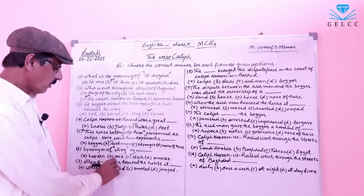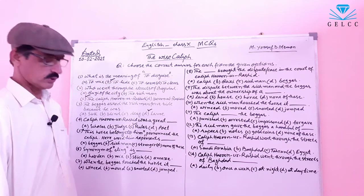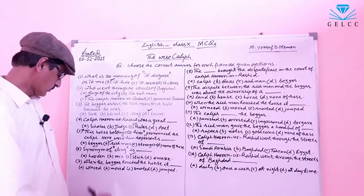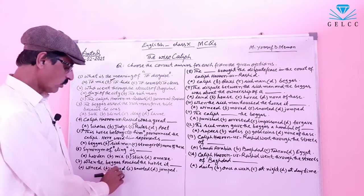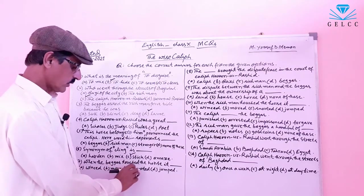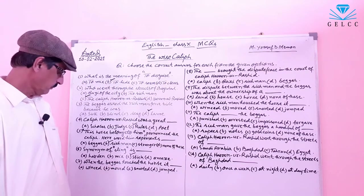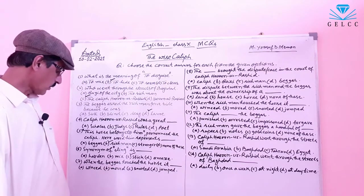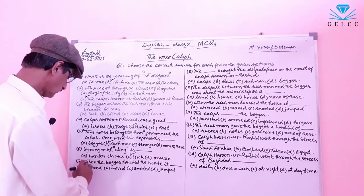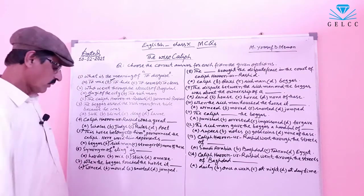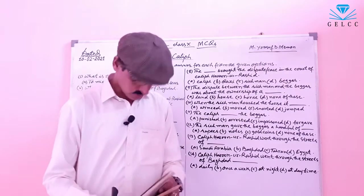Number 7: When the beggar touched the horse, it what? Options: A: Winced. B: Moved. C: Snorted. D: Jumped. The correct answer is A — winced. When the beggar touched the horse, it winced.